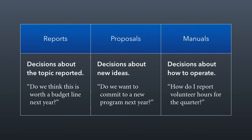Manuals involve decisions about how to operate. People within the organization need to know how to do things. For example, how do I report volunteer hours for the quarter? A lot of organizations have to track volunteer hours for reporting purposes, and you need to communicate the process to the people doing the reporting. If you don't give them these instructions through something like a manual, then you don't get the information you need. It's really important that you focus on the decisions being made in each of these cases, and that should be the way you gear everything that you write.